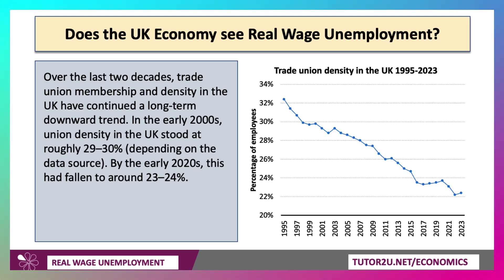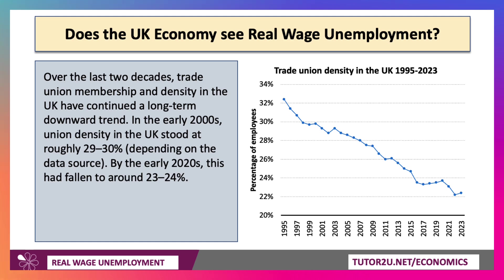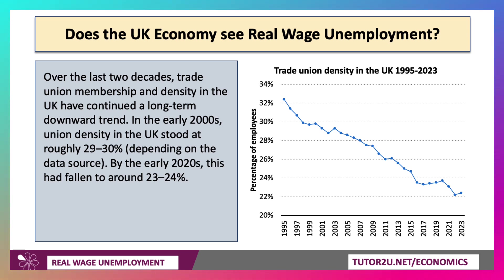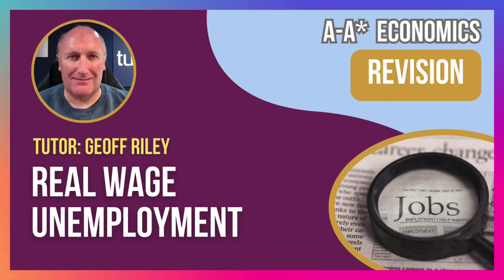Unions are also less powerful than they once were. Looking at trade union density — which measures the percentage of people in a particular industry or occupation who are members of a union — trade unions negotiate wages and conditions collectively on behalf of their members. Over the last 20 to 30 years, trade union membership and density in the UK has continued a long-term downward trend that started in the early 1980s. Around 25 years ago union density was about 30%, but it's now fallen to around 22% to 24%. In other words, less than one worker in four in the UK is a member of a trade union. So when asked about unions causing real wage unemployment, keep that in mind — the majority of people in work in the UK are not union members, meaning unions are less likely to be a cause of real wage unemployment.